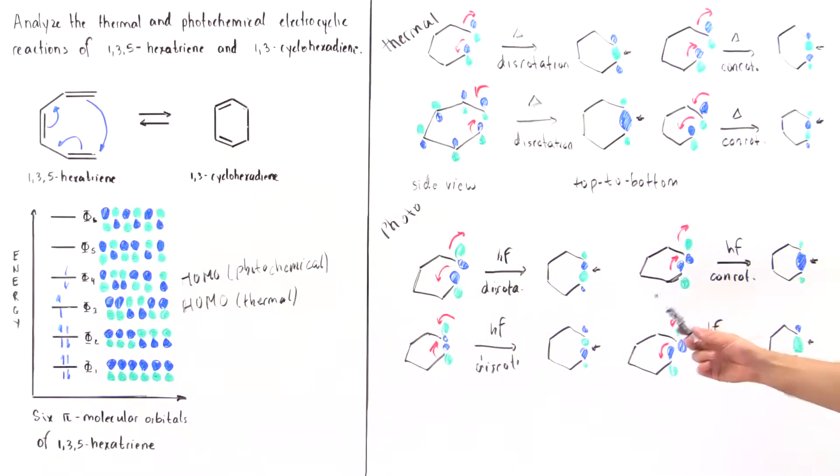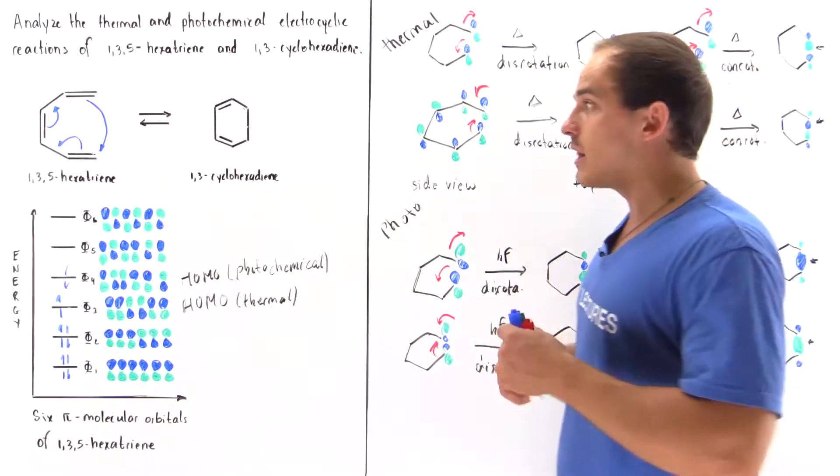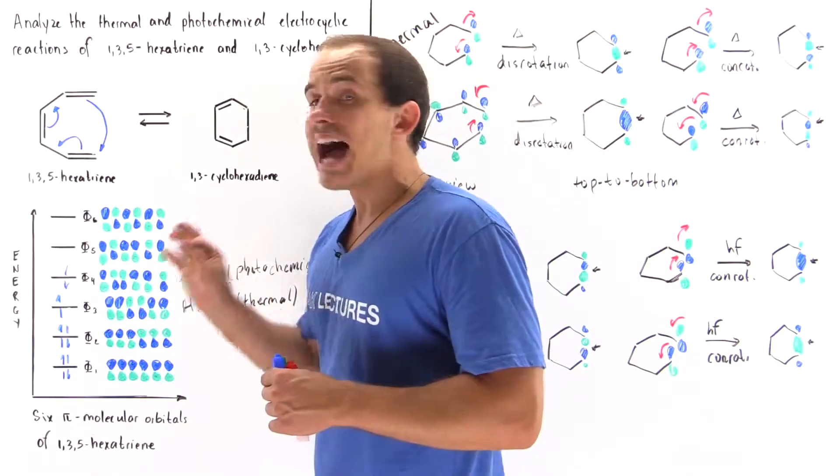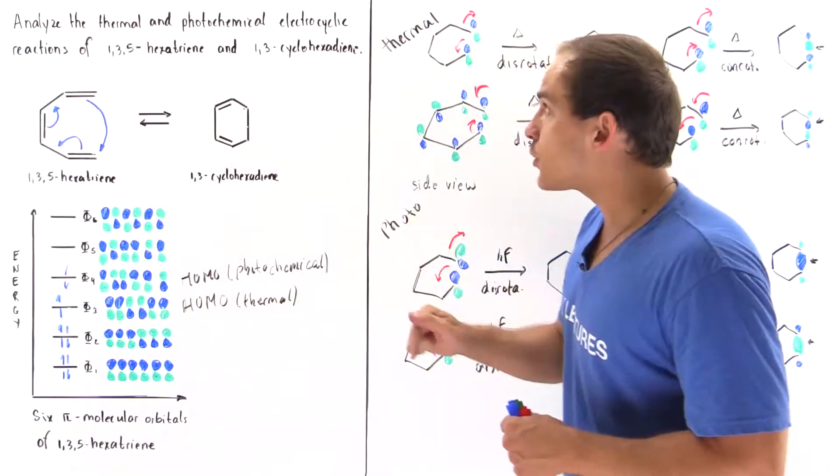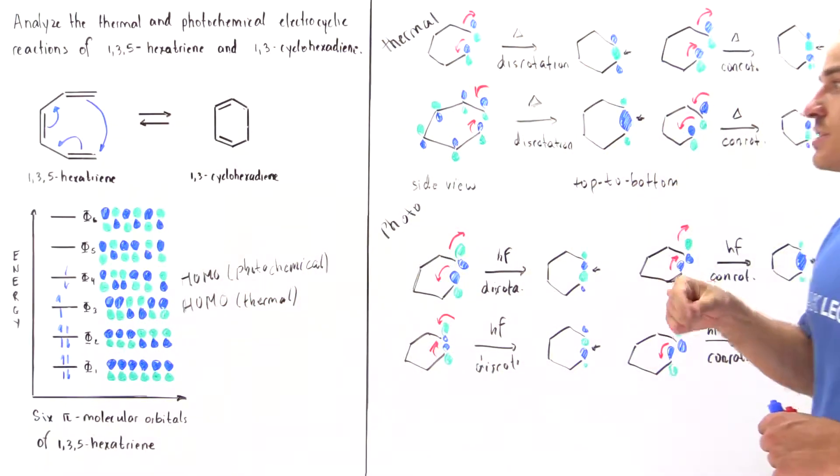the disrotation does not lead to bonding, but this does lead to bonding. So the main point from this lecture is to show you that not always does thermal electrocyclic reaction take place